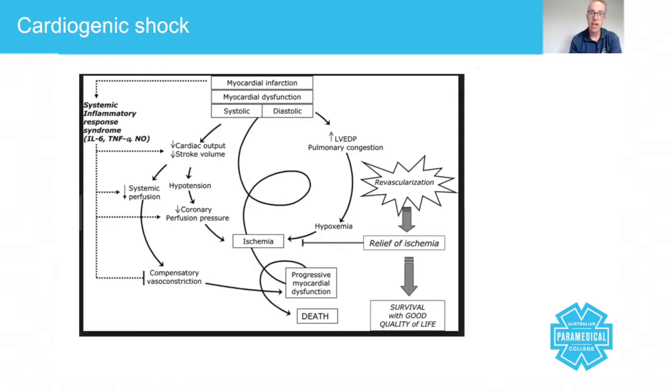So let's take a look at cardiogenic shock. Cardiogenic shock occurs when the heart itself is not pumping blood adequately to be able to deliver the blood to the tissues. So it's really important that we know a little bit about it and some of the effects of it.